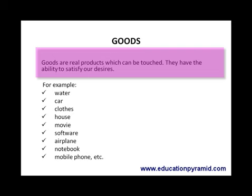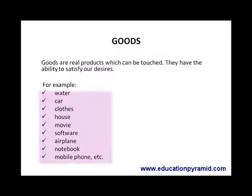Goods are real products which can be touched and they have the ability to satisfy our desires. For example, water, car, clothes, house, movie, software, airplane, notebook, mobile phone, etc.